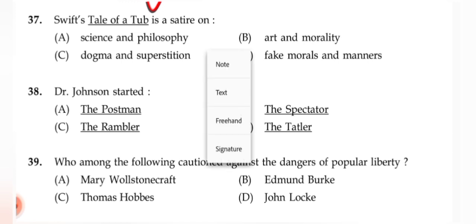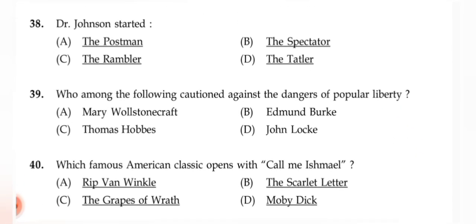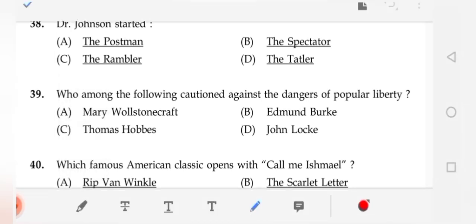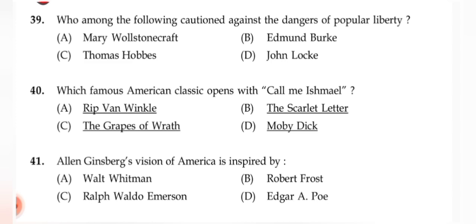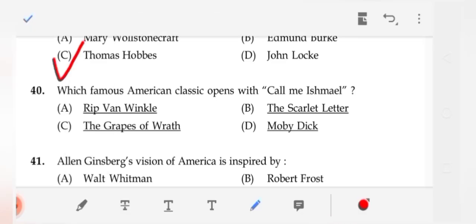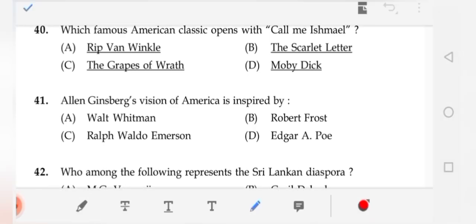Question 36: Pope's 'Essay on Criticism' sums up the art of poetry as first taught by whom? The correct answer is (B) Horace. Question 37: Swift's 'Tale of a Tub' is a satire on — the correct answer is (1) science and philosophy. Question 38: Dr Johnson started (C) 'The Rambler.' Question 39: Who cautioned against the dangers of popular liberty? The correct answer is (C) Thomas Hobbes.